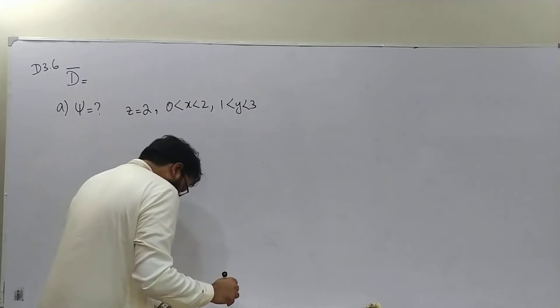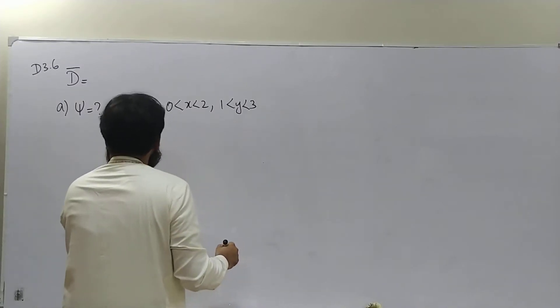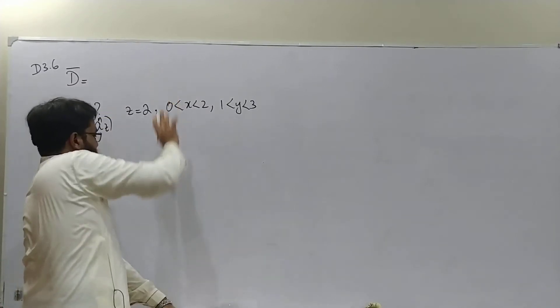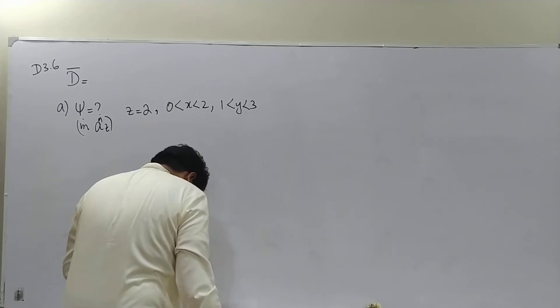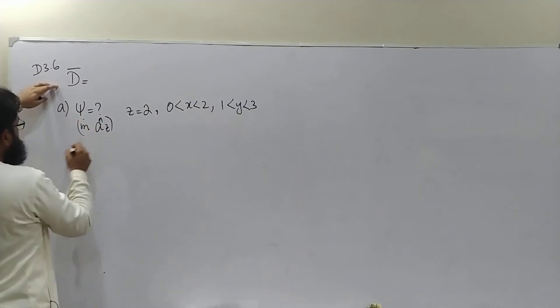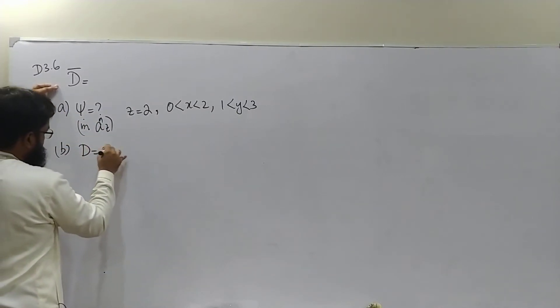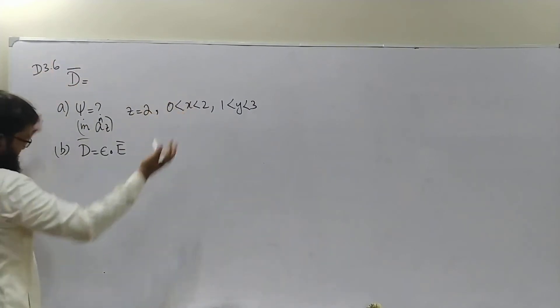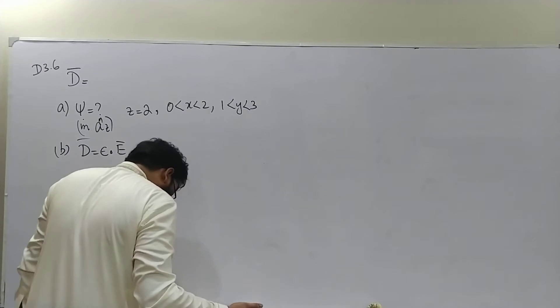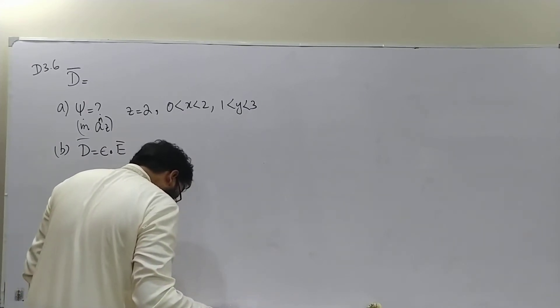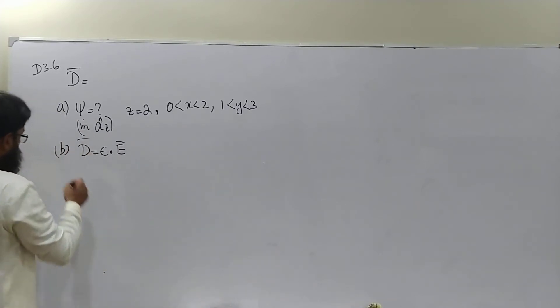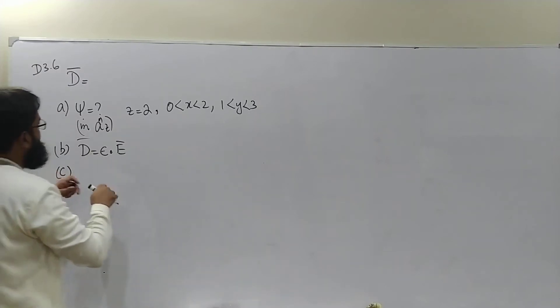And in az direction. So we want this one. In Part B, you have to find electric field intensity. Use D equals epsilon naught E. So D is given to you, whatever the value is, just use this expression to find E at the given point. In Part C, find the approximate value of total charge contained in an incremental sphere. We'll talk about this later on.